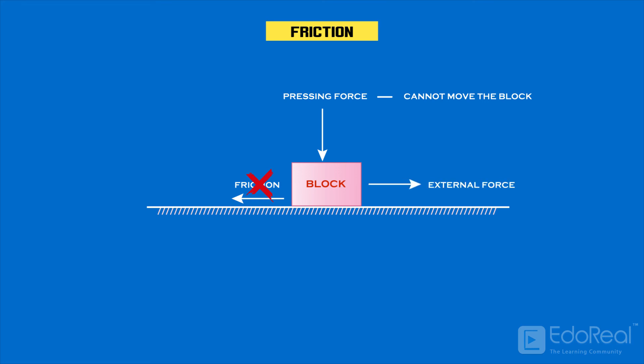Only when a pushing or pulling force is applied, frictional forces start developing at the interface of the objects in the opposite direction and oppose the applied force. Let's consider a pulling force. This pulling force is balanced by frictional force and the object remains in equilibrium.